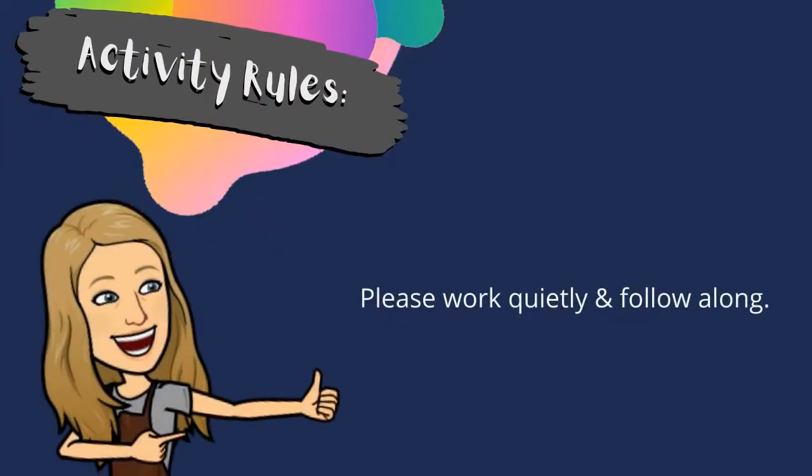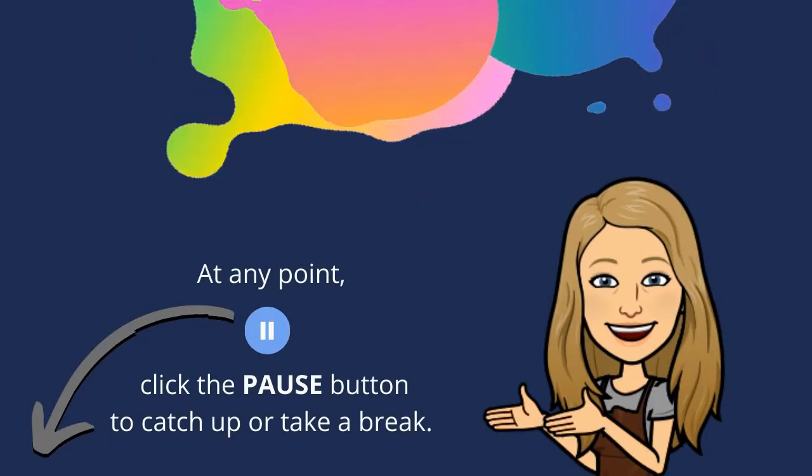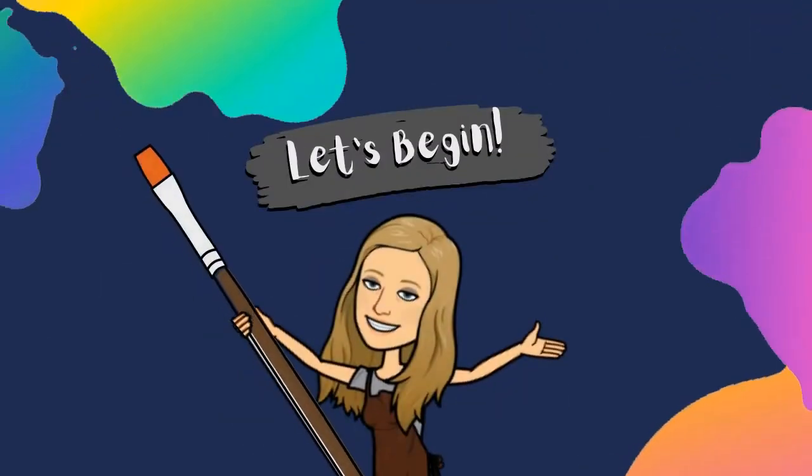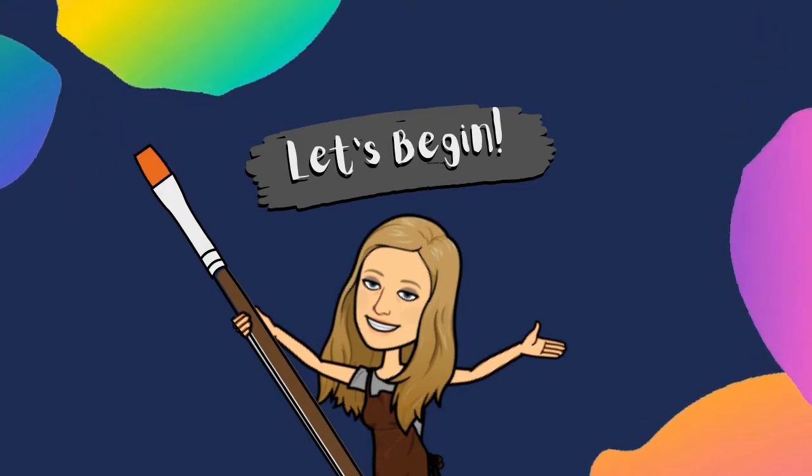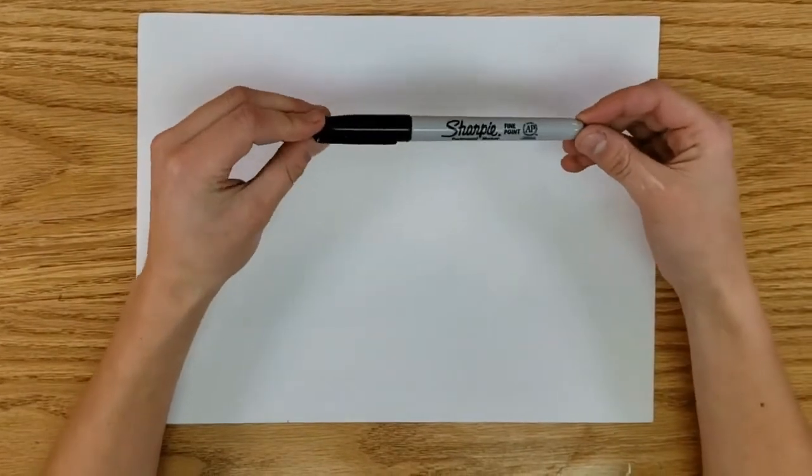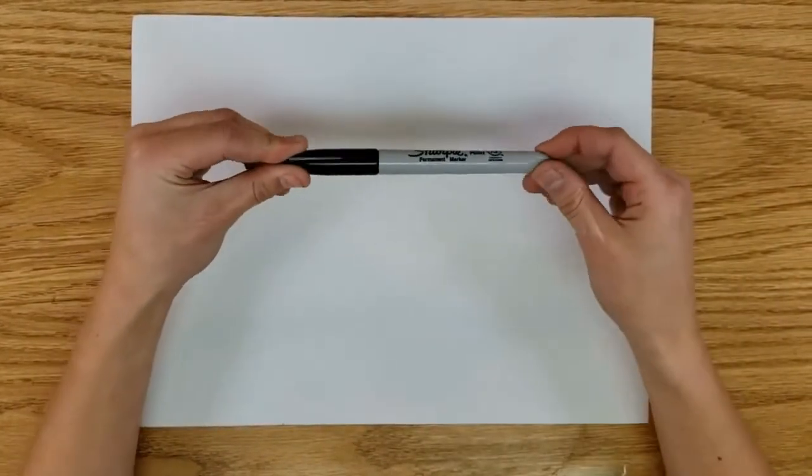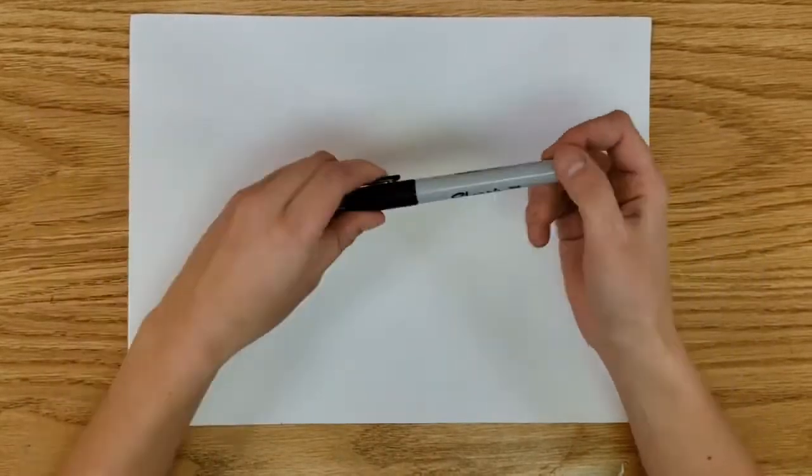Please work quietly and follow along. At any point, click the pause button to catch up or take a break. Hey artists, today I'm going to show you how to draw the famous artist Paul Klee's cats. I'm going to be using a Sharpie marker so you can see things nice and clearly in the video, but you might want to use a pencil just so you can always erase.